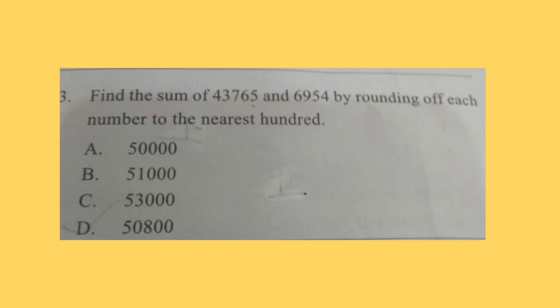Question 23: Find the sum of 43,765 plus 6,954 by rounding off each number to the nearest hundred. You have to round off both the numbers to the nearest hundred. So the first number will become 43,800 and second number will become 7,000. Correct answer is option D, 50,800.